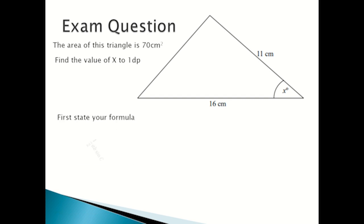Okay, first you state your formula, which is a half a b sine c. But this time you have to rearrange it, as we already know what the area of this triangle is but we need to find out what the angle is. So you would rearrange your formula to get sine c equals area over half times a b.